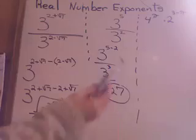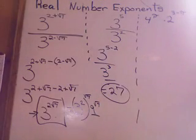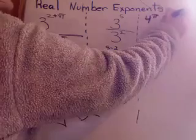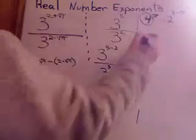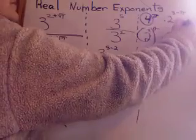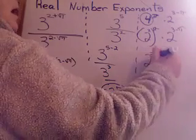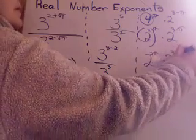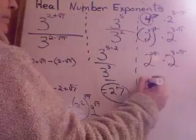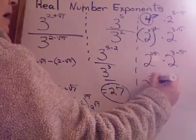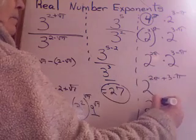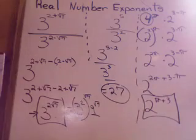Can I add exponents in this one? Trick question. We have 4 to the pi times 2 to the (3 minus pi). I can rewrite 4 as 2 squared, so it becomes (2 squared) to the pi, which is 2 to the 2 pi. Now the bases are the same, so I add exponents: 2 pi plus (3 minus pi) gives 2 to the (pi plus 3).